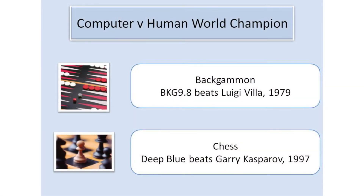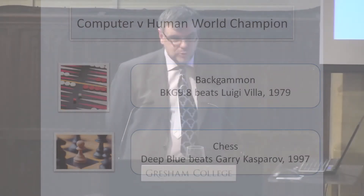Chess, being a game of pure skill, leaves no room for such luck, and it was not until 1997 that a computer beat the world champion in a chess match — when the IBM supercomputer Deep Blue beat Garry Kasparov three and a half to two and a half. Deep Blue had enormous computing power, with 30 processors of 120 megahertz working in parallel, and it could evaluate 200 million positions per second.